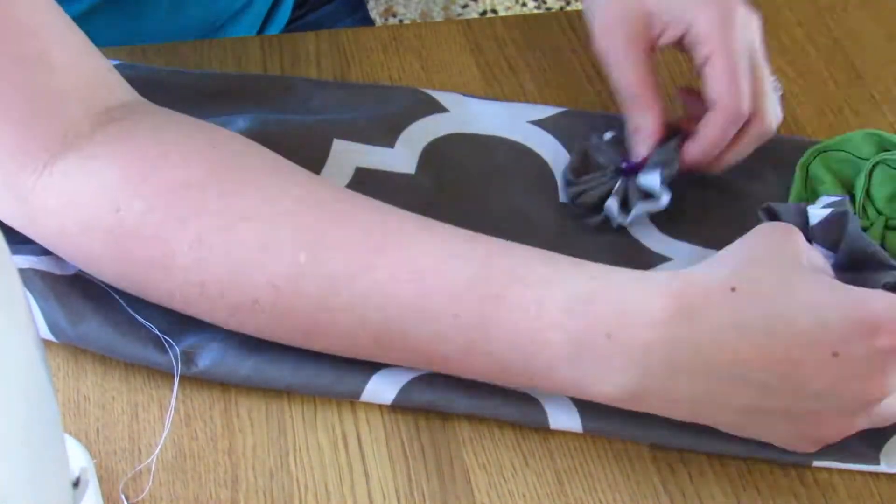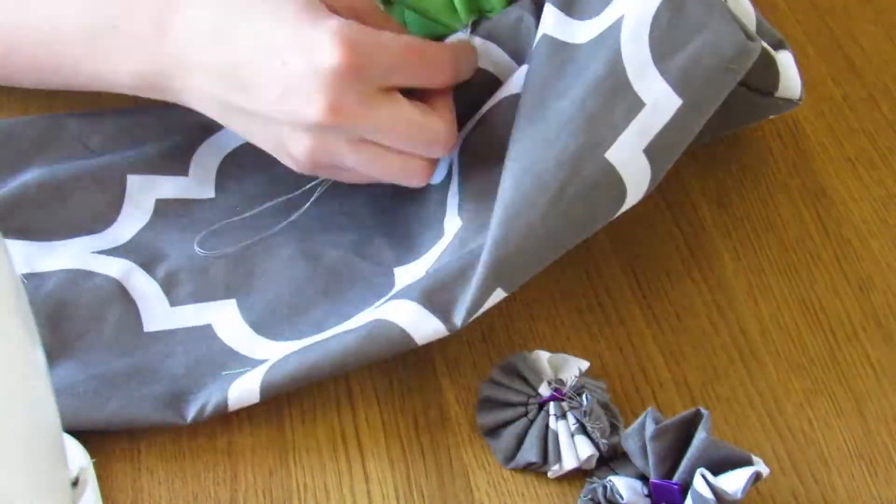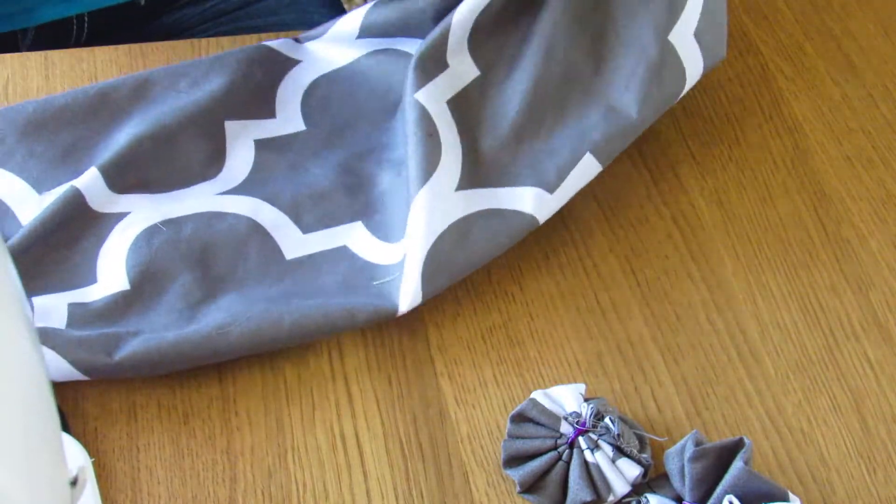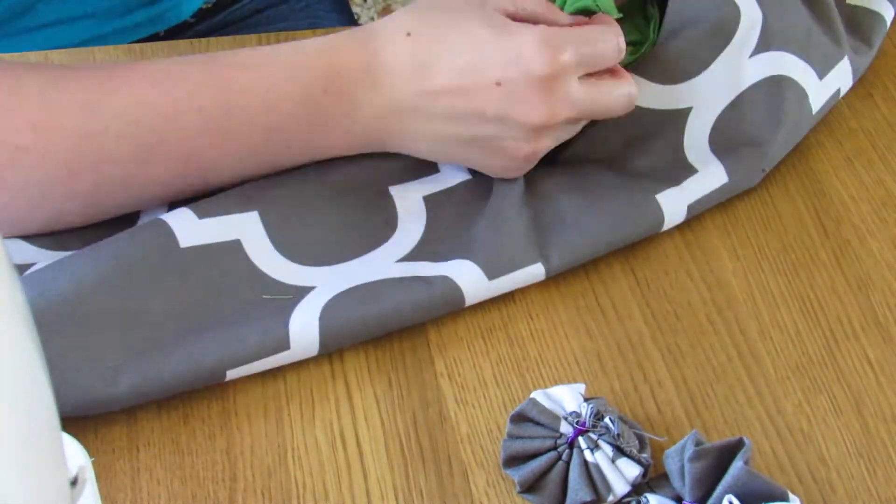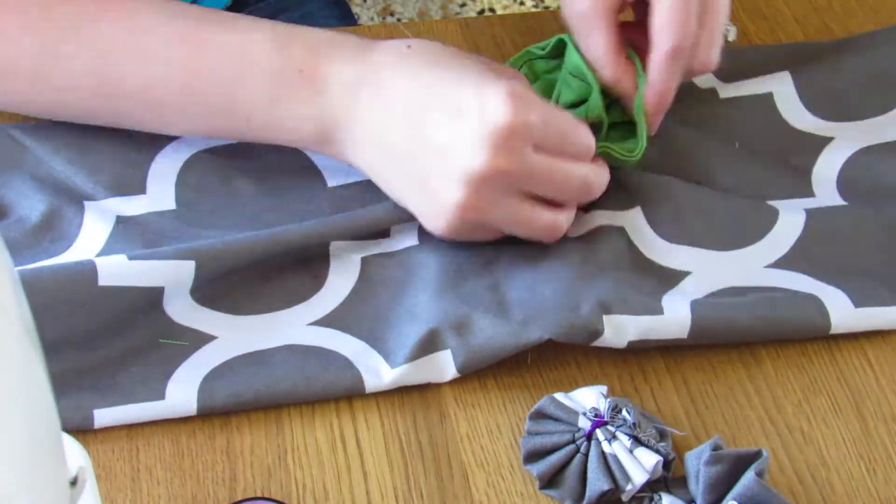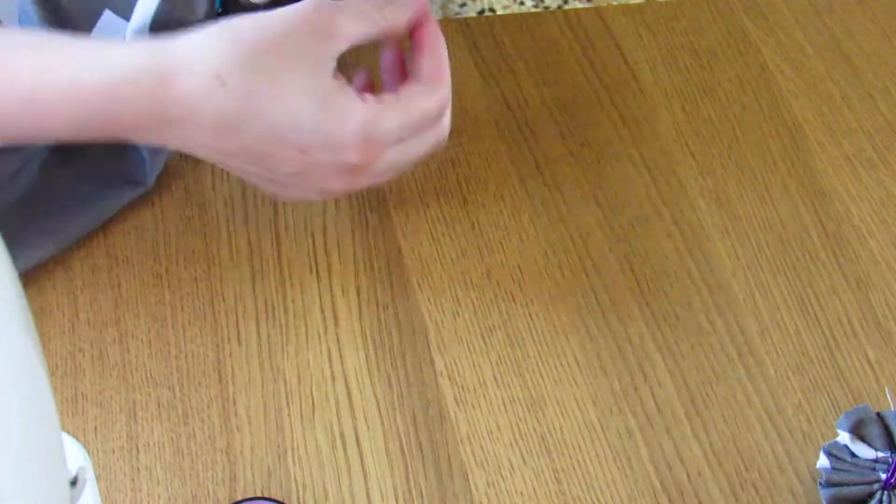Now you're going to go ahead and figure out what flowers you want. I couldn't make up my mind. Once you do that, you're going to go ahead and hand stitch them on. This could also be easier if you do it before you sew it together. You can do that to make it easier to sew your flowers on before you close it up.